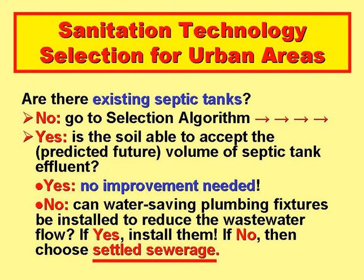So how in practice do we select a sanitation technology? Probably the best way is to ask a series of questions. The first question is: are there existing septic tanks? Asking these questions means that we're not, at least initially, considering the poor, as septic tanks are likely only to be found in middle and high-income areas. The questions and answers indicate that if there are septic tanks, then we do nothing, or install water-saving plumbing fixtures, or go for settled sewerage. If there aren't any septic tanks, we go to the main algorithm.